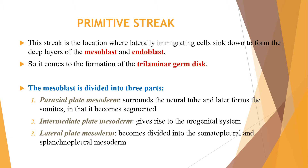The primitive streak is the location where laterally immigrating cells sink down to form the deep layers of the mesoblast and endoblast, leading to the formation of the trilaminar germ disc. The mesoblast is divided into three parts: the para-axial plate mesoderm, which surrounds the neural tube and later forms the somites; the intermediate plate mesoderm, which gives rise to the urogenital system; and the lateral plate mesoderm, which becomes divided into the somatopleural and splanchnopleural mesoderm.